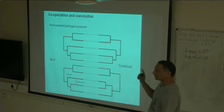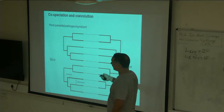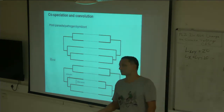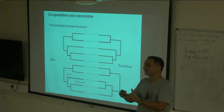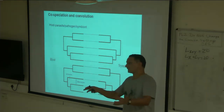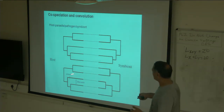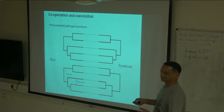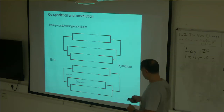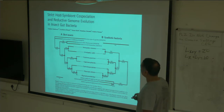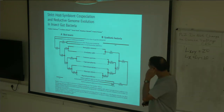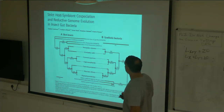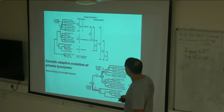The last example is co-speciation — an exciting area of research where if you have a host and a symbiont, for example gut microbes and their host, often the phylogeny of the host and the symbiont overlap perfectly. Every time there is a speciation event in the host, there is also a speciation event in the symbiont. But if the two do not match, that means there has been a host shift. Here is an example of a perfect match: the phylogeny of an insect host and its bacterial symbiont — a perfect match, which is co-speciation. So those are some of the applications of phylogenetics.